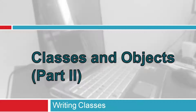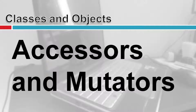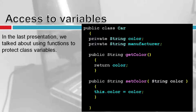Welcome back to Bytes of Pi. Today's video will cover the second part of classes and objects. The first part we'll talk about is accessors and mutators. From our last video, we talked about protecting member variables by making them private and only allowing access to them through different functions — these are called accessors and mutators.